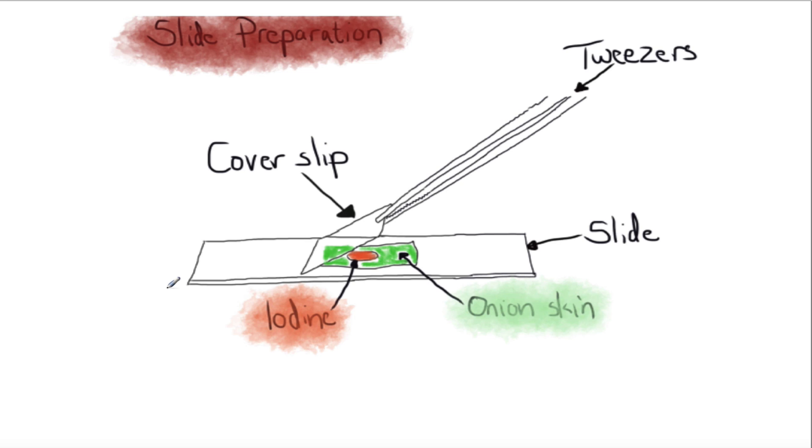The trickiest bit is trying to peel the onion skin to get just one layer, because if you get multiple layers, the cells will overlap and become very confusing. If you manage to get that fiddly bit, lay it flat without crinkles or wrinkles, then add a drop of iodine. For plant cells we use iodine; the idea is it will stain and bind to certain parts of the cells and tissue.